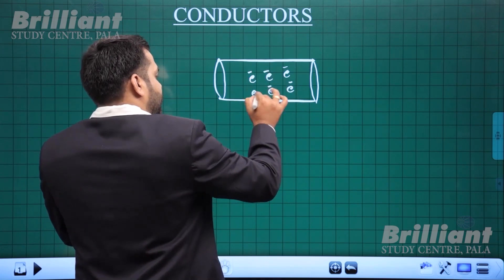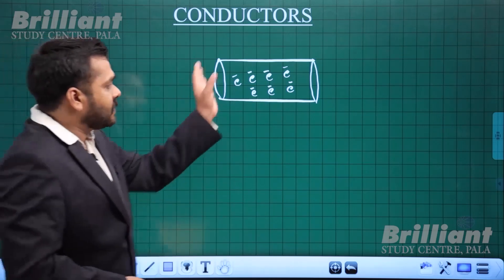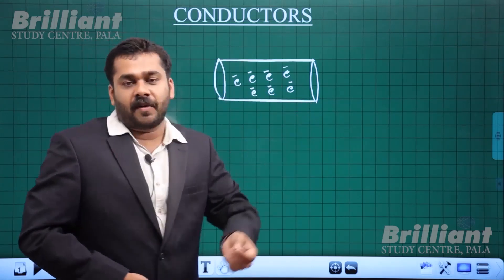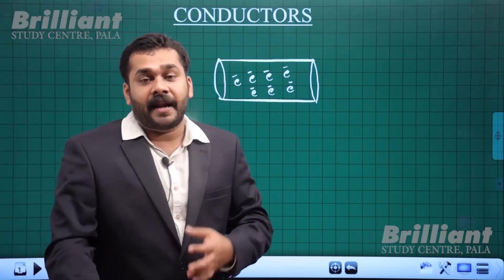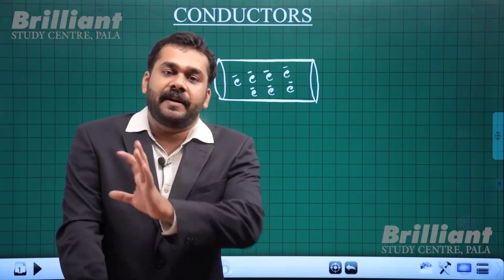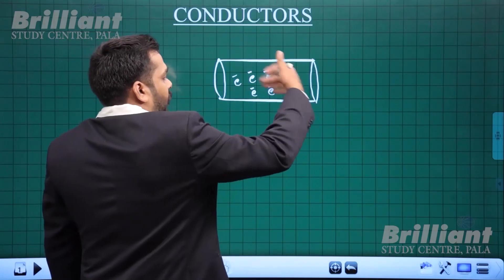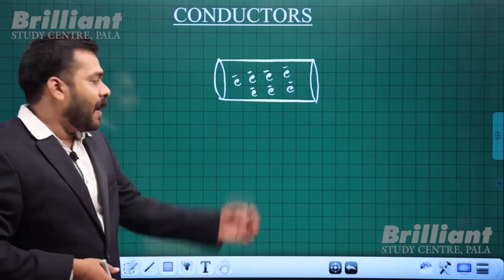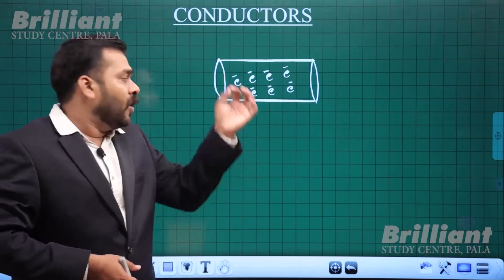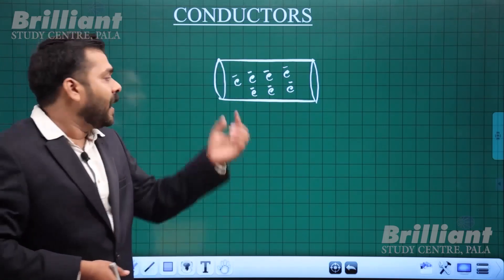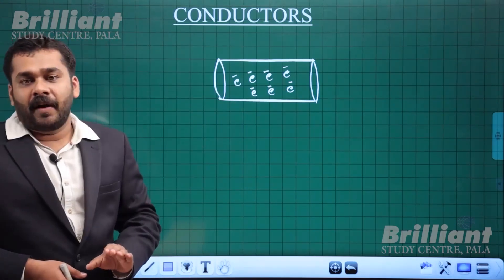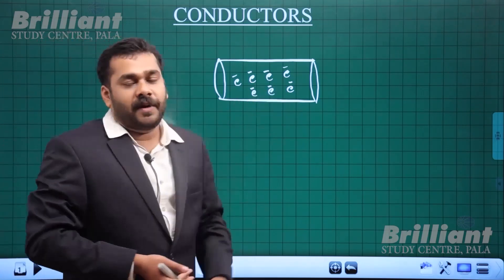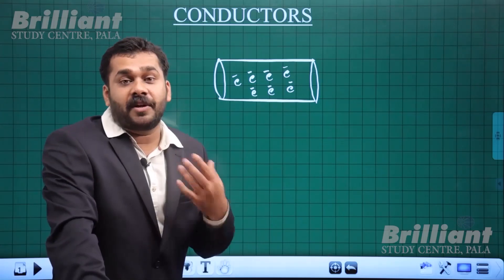Free electrons are present inside the conductors. Are they moving? Yes, they are moving, because the surrounding temperature is present. From the surrounding temperature, the free electrons are always randomly oriented. Random orientation means they do not have a particular direction — they are randomly oriented, colliding with ions continuously. The average velocity direction is non-uniform.